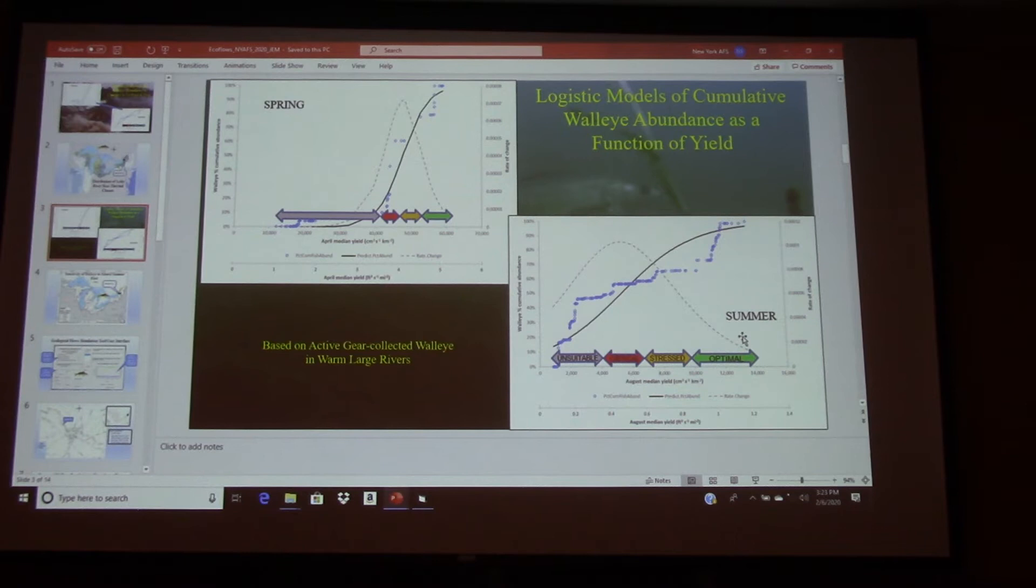So what you'll see here in the summer, walleye flows that we have data for go up to about 1.4. And these are cubic feet per second per square mile. That's the yield part. In the spring, it goes high as 6. This is quite a bit more water to deal with.